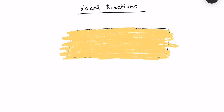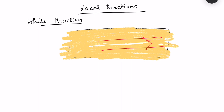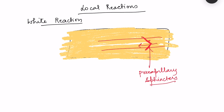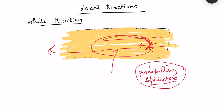Moving on to local reactions of the skin — the first is the white reaction. When the skin is stroked firmly by an object, a white line appears. This occurs because the stroking causes constriction of the pre-capillary sphincters due to the mechanical effect. This prevents entry of blood into the capillaries, and whatever blood is present drains out, making the stroked region appear white.